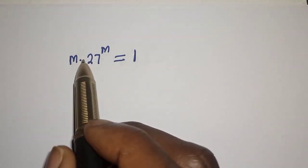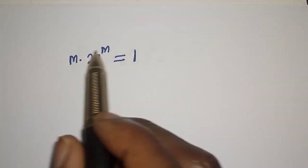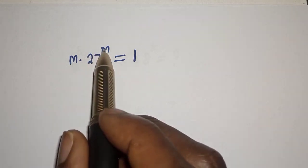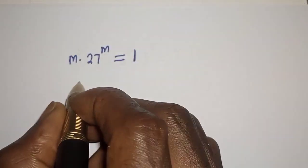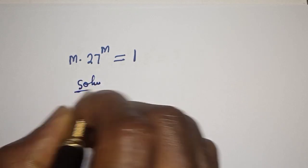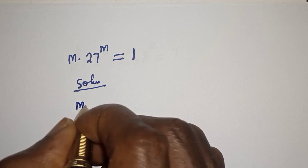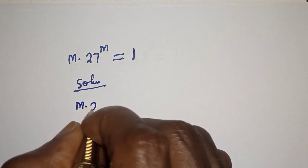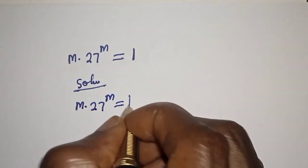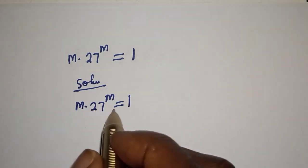Hello, welcome to Magis. In this class I want to find the value of m from this beautiful equation: m multiplied by 27 raised to the power m is equal to 1. Let's divide both sides of this equation by m.